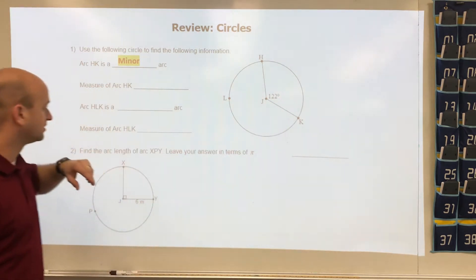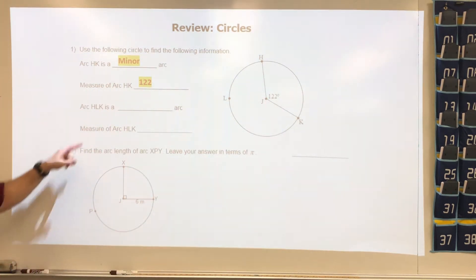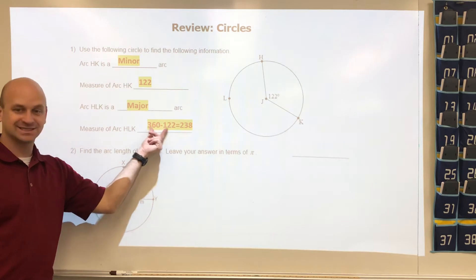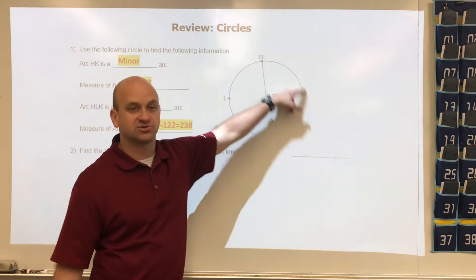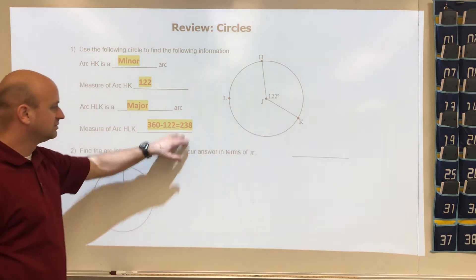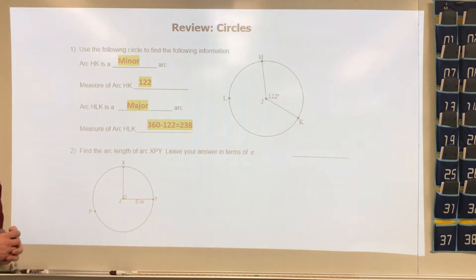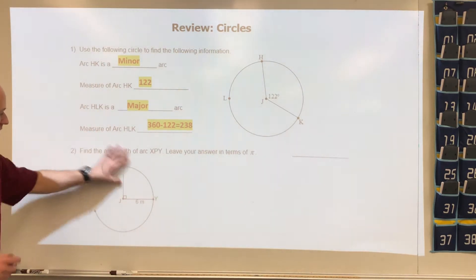We're looking for the minor arc. The measure of the arc is based off the central angle, so this arc here is going to be 122 degrees. Arc HLK is going to be a major arc, and the measure of that will be 360 minus 122. The whole thing is 360, we subtract the 122 we have here, which gives us an arc measure of 238 degrees.